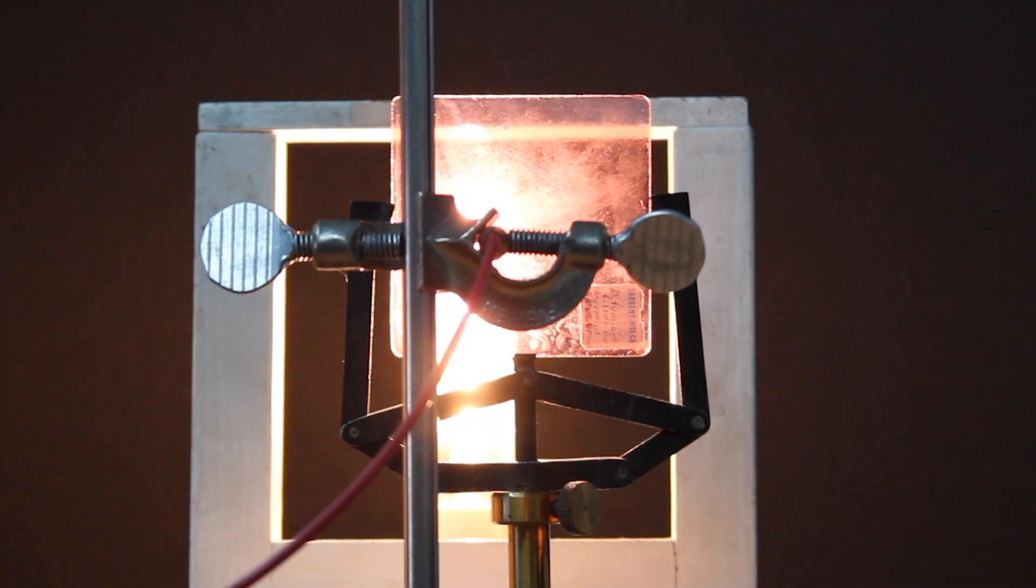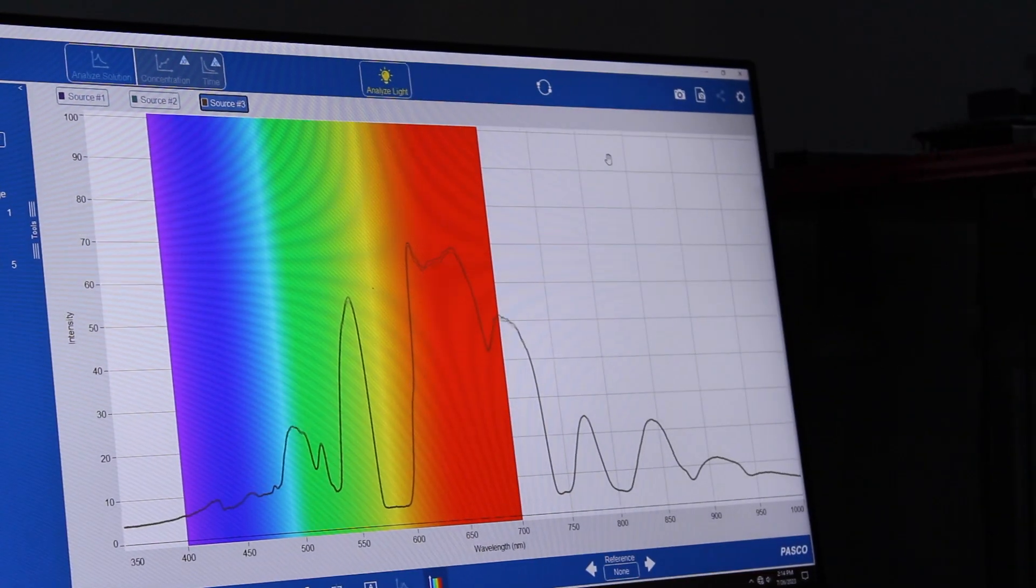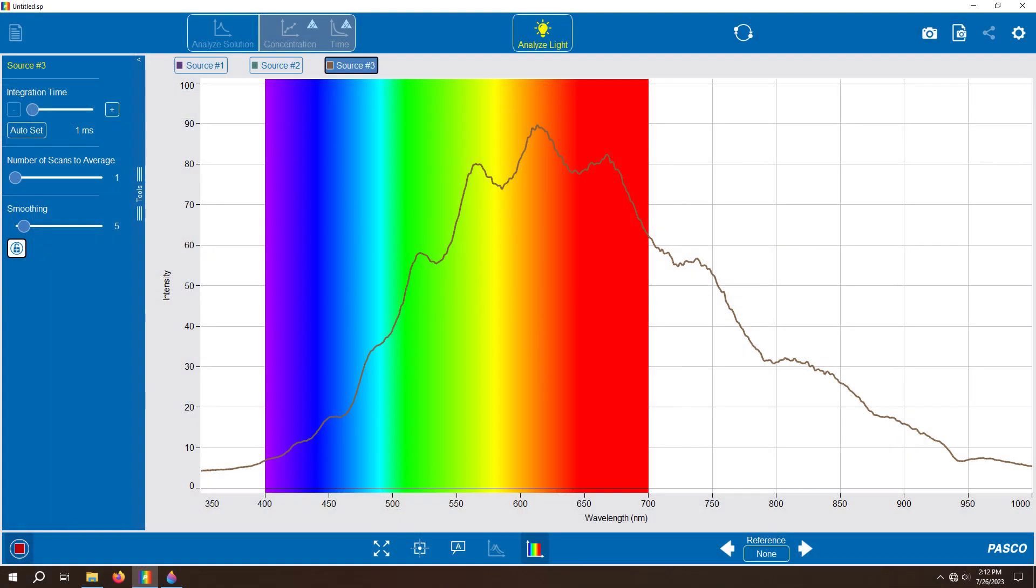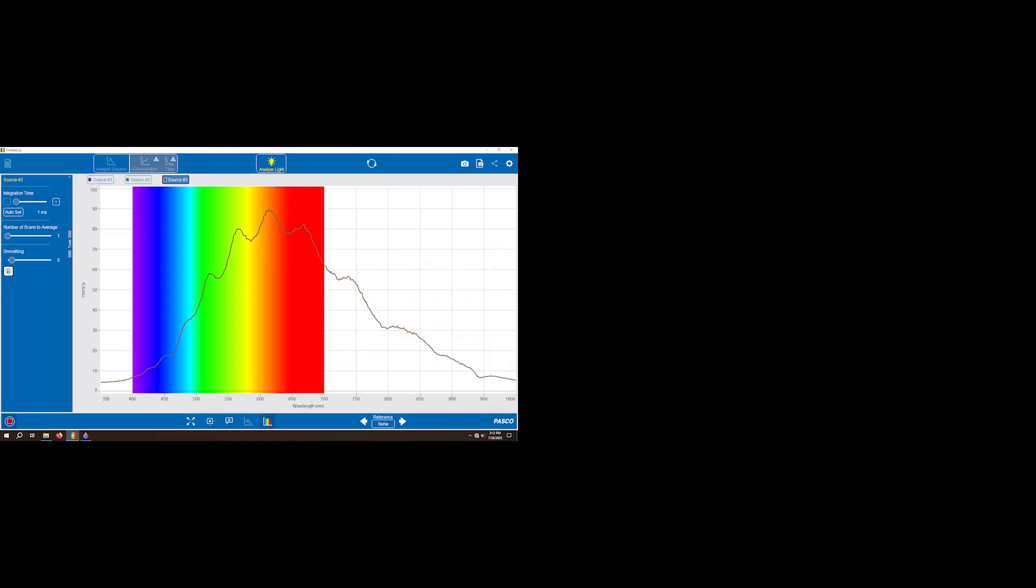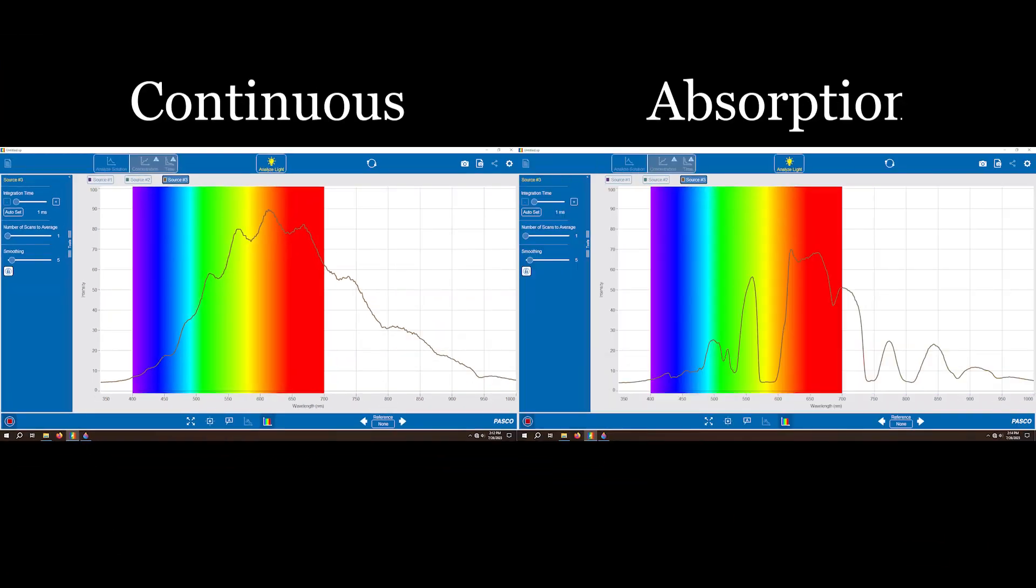This is even more apparent on the computer as we can see the missing yellow light in the spectrum graph. Here is our original continuous spectrum, and here is the absorption spectrum created by the didymium.